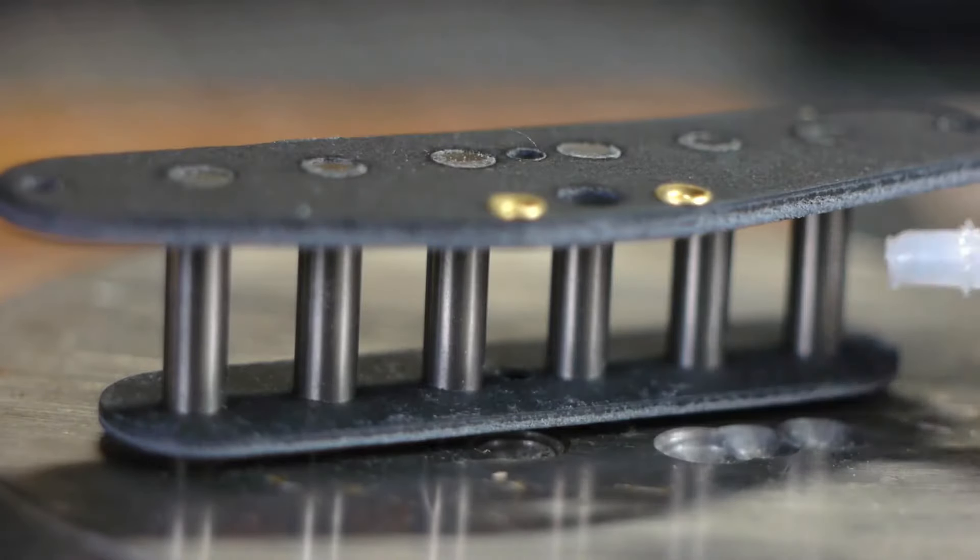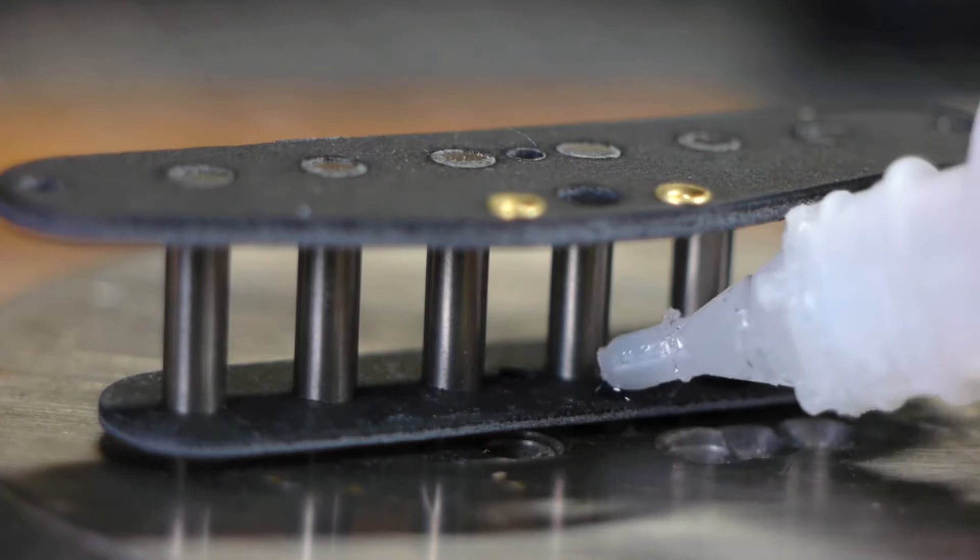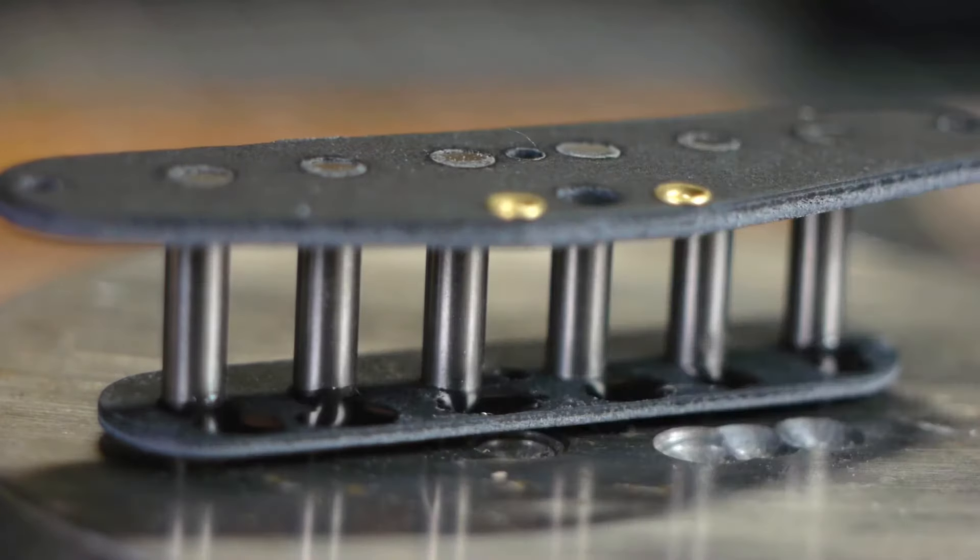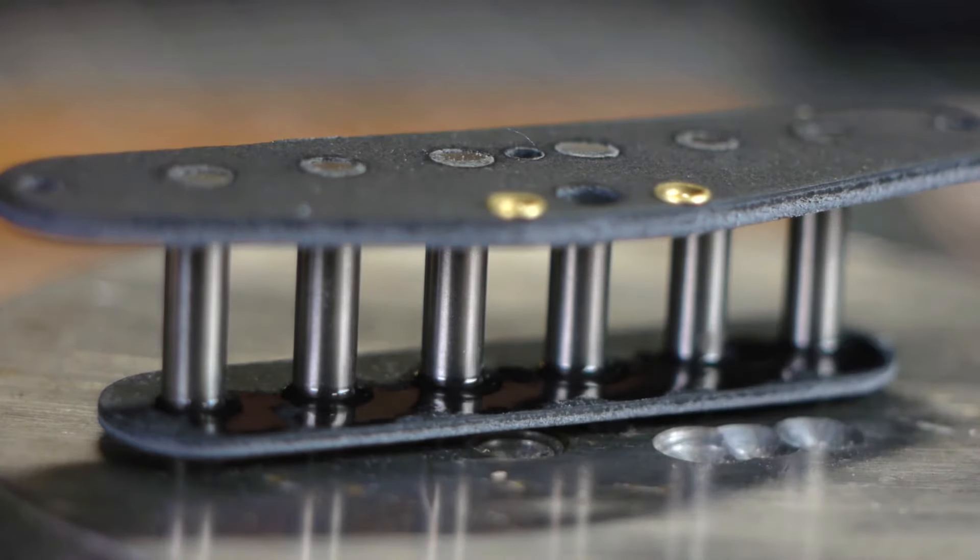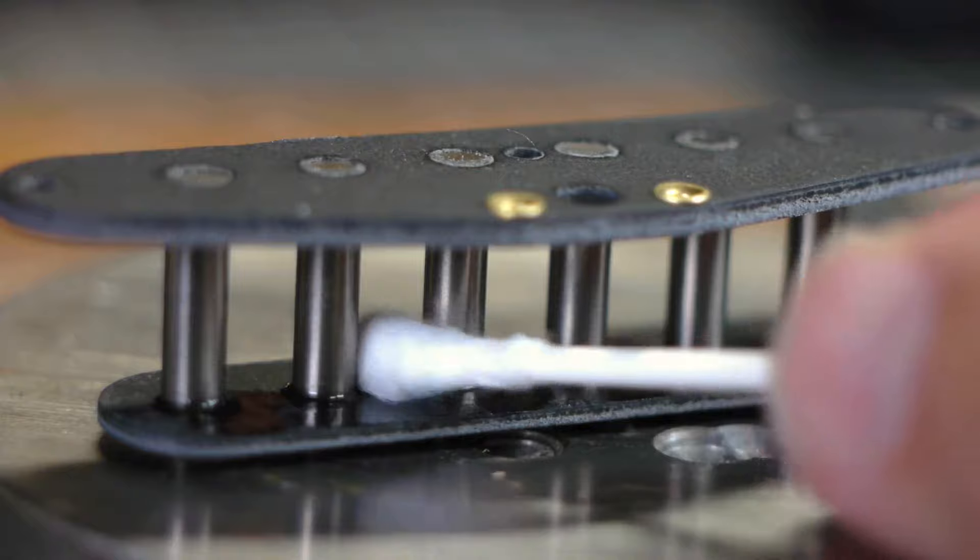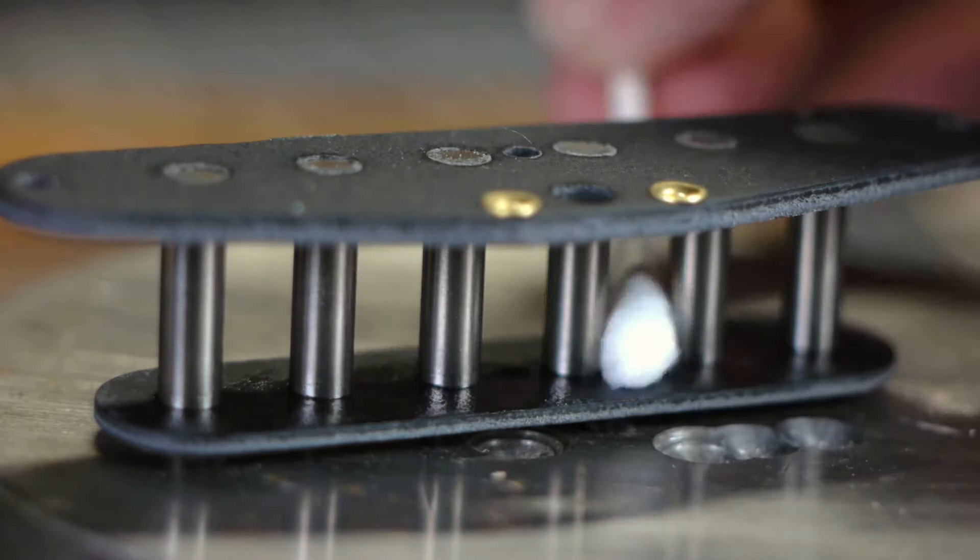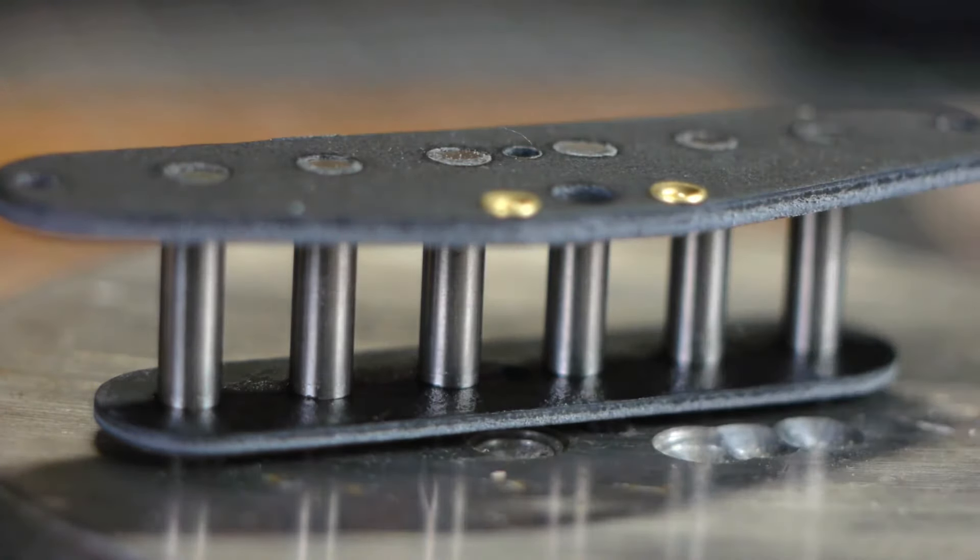Flip the pickup over and repeat the process on the underside of the top flatwork. As the underside is not going to be visible, aesthetics don't matter, and I can focus on saturating the area with glue. Move it around with a toothpick to make sure every single pole piece has plenty of glue to wick into any voids, then clean it with a Q-tip.